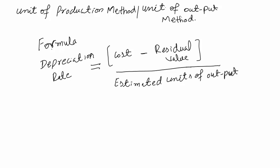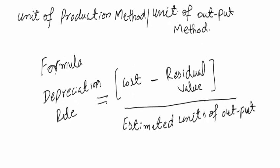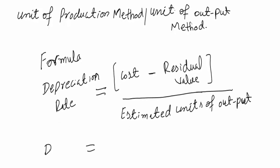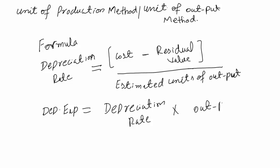The depreciation rate is equal to cost of an asset minus residual value, divided by estimated units of output. The depreciation expense is equal to the depreciation rate multiplied by output units.